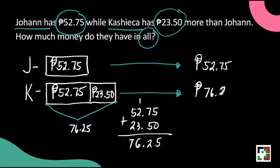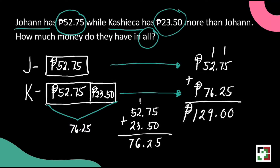All we need to do to get the final answer is to find the total money they both have, and our final answer is 129 pesos. And that's it.